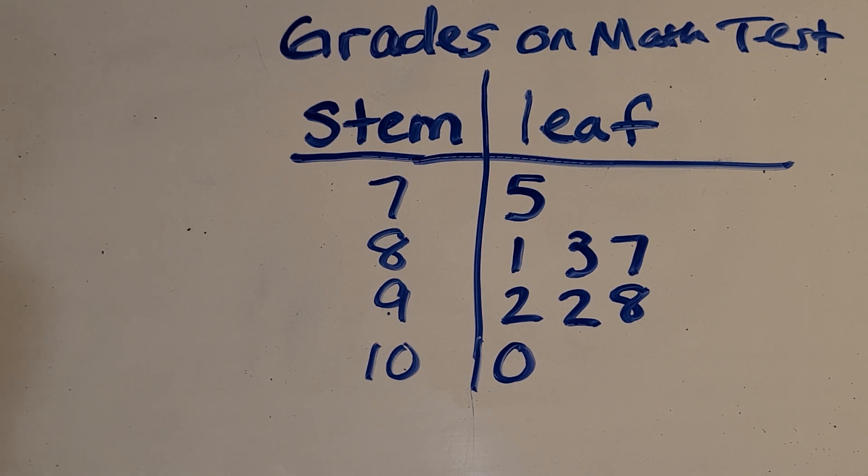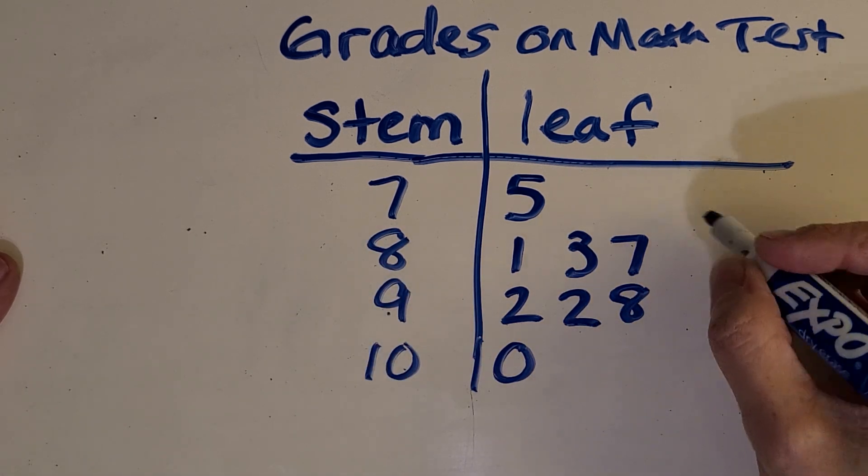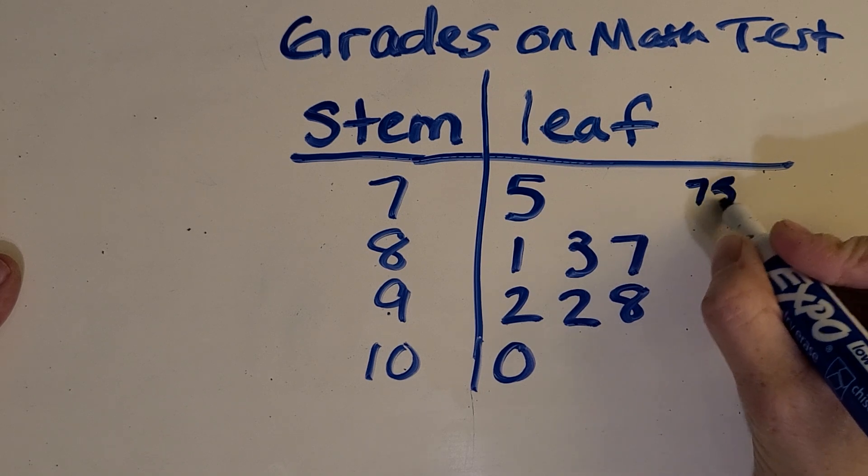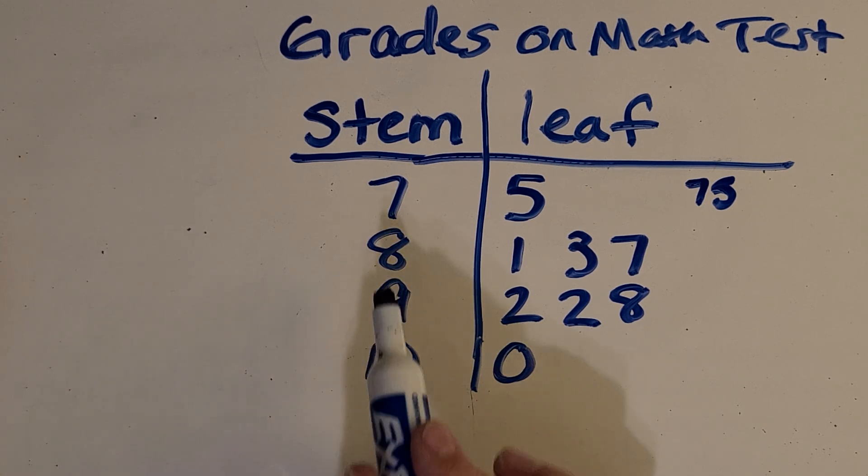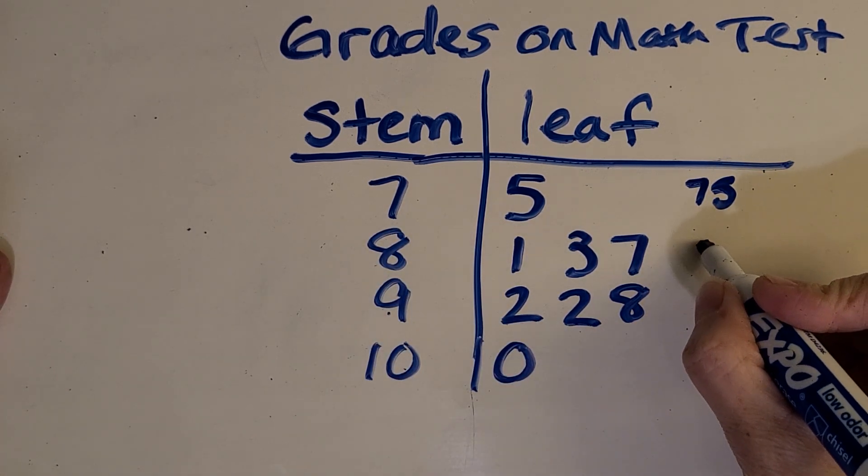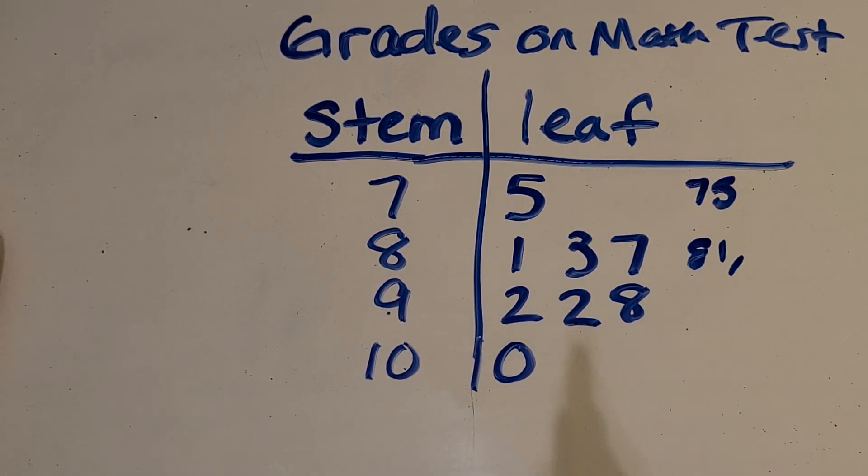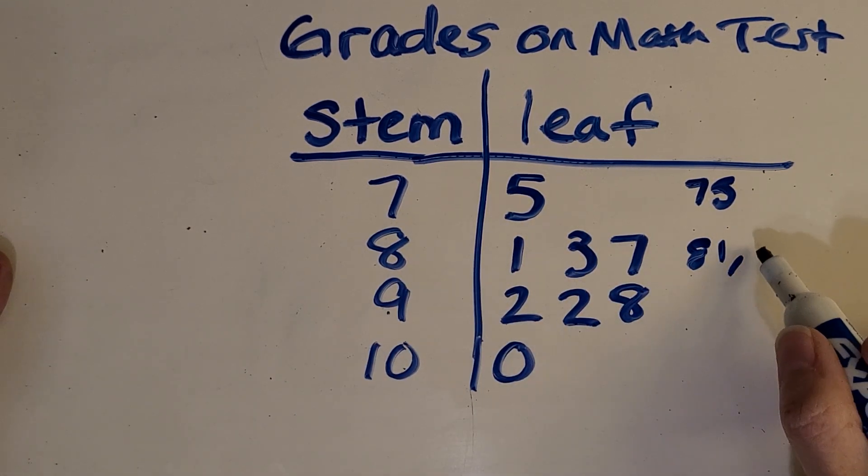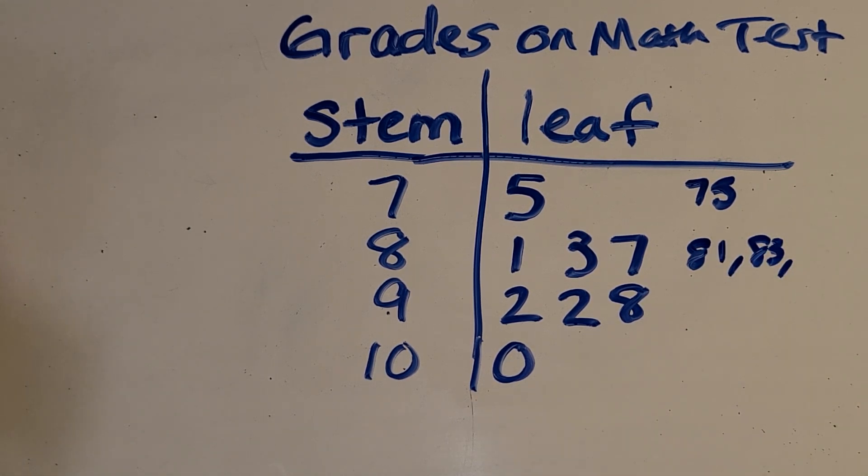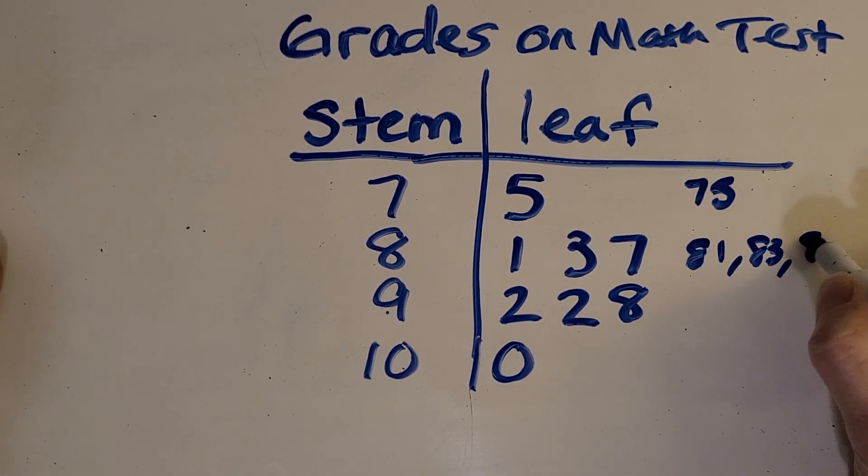So this row is 75. I'll write that down. What do you see in the eight stem? What do you think these numbers are worth? I see an 81. And since there's three leaves, there's going to be three grades. 83. What's the last one? Good, 87.